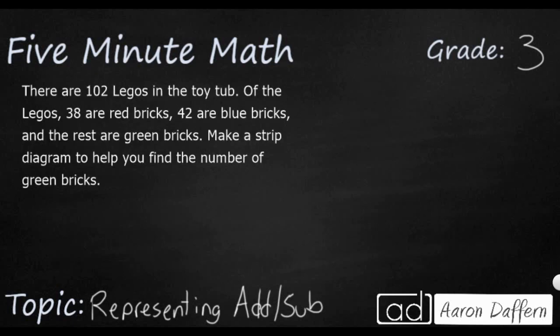Now we have a new problem. We have 102 Legos in a toy tub. And of those 102, we've got some different items. We've got 38 of them are red, 42 are blue, and then it says the rest, which means that's going to be our missing number. The rest of them are going to be green bricks. So we need to make a strip diagram to help you find the number of green bricks.